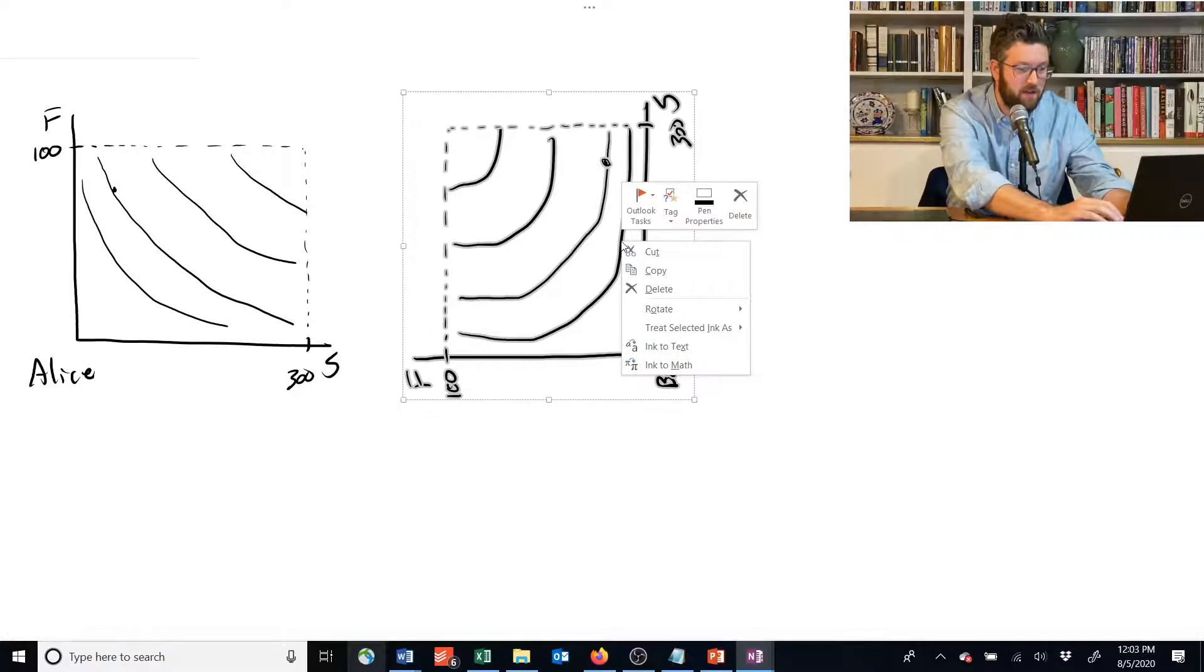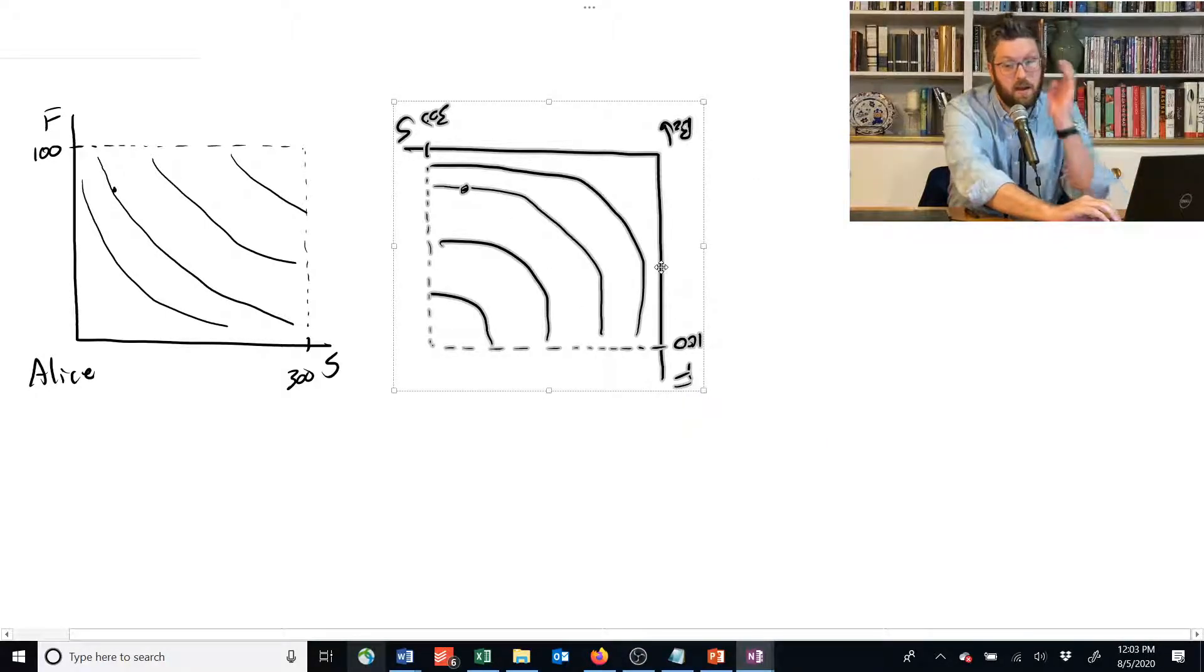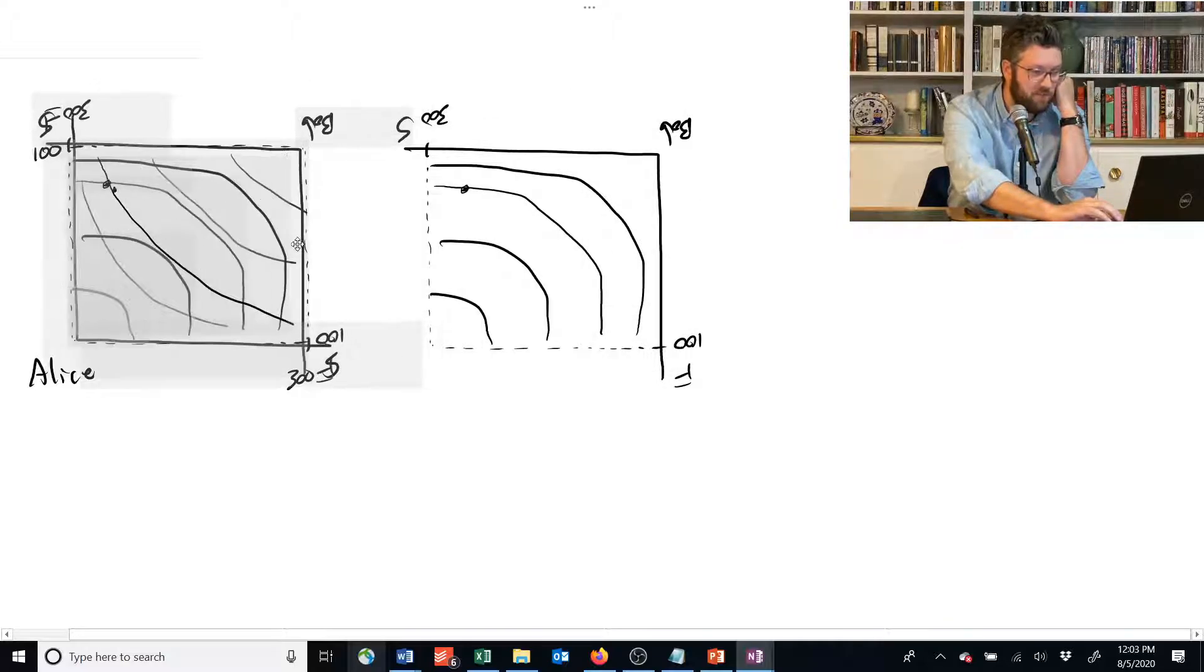Flip it upside down and 180. And now we're going to merge his set of preferences onto Alice's and have a description of everyone's preferences in this economy.